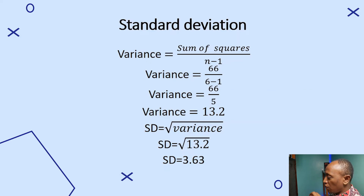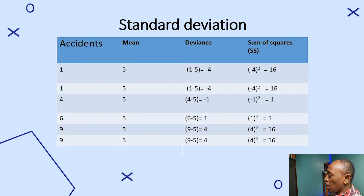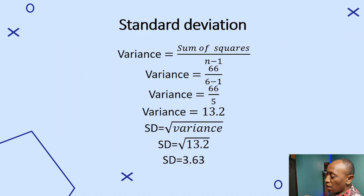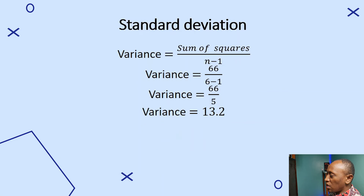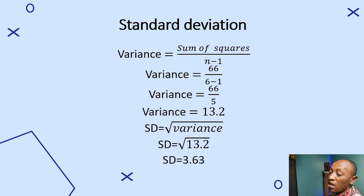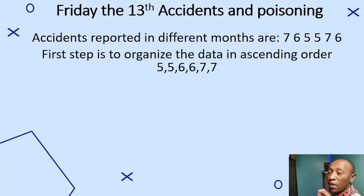Comparing the mean of 5 and the standard deviation of 3.63, we find they are relatively close together. A higher standard deviation means the numbers deviate significantly from the mean. Looking at our series ranging from 1 to 9, this explains the higher standard deviation.